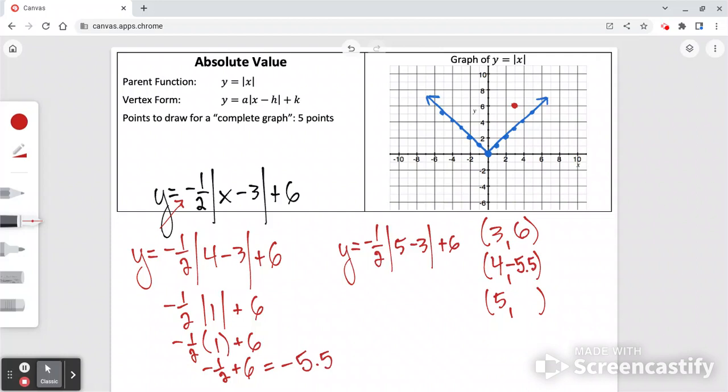Let's do the same thing for x equals 5. So inside the brackets, 5 minus 3 is 2. The absolute value of 2 is 2. 2 times negative 1 half is negative 1, plus 6 would be 5.